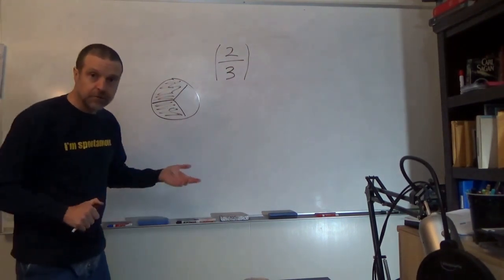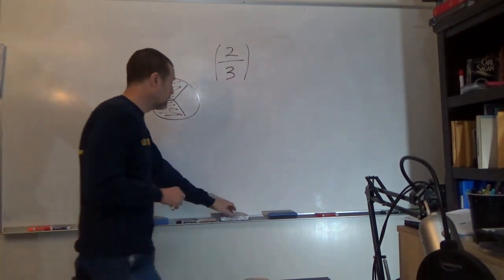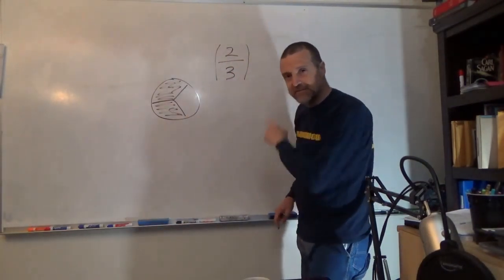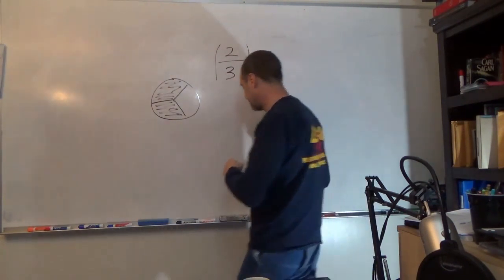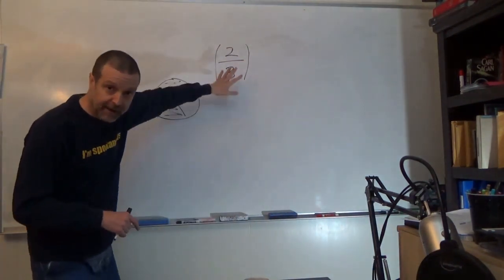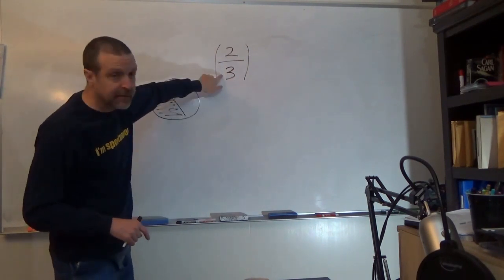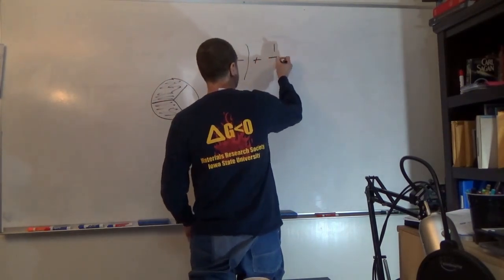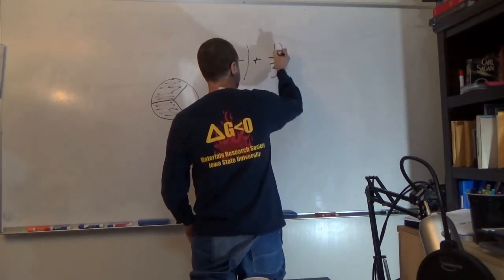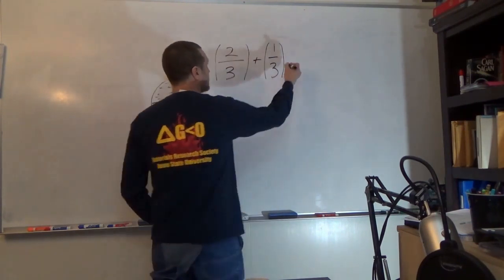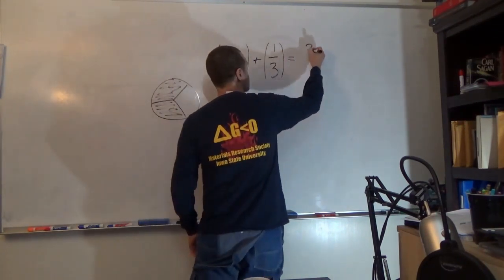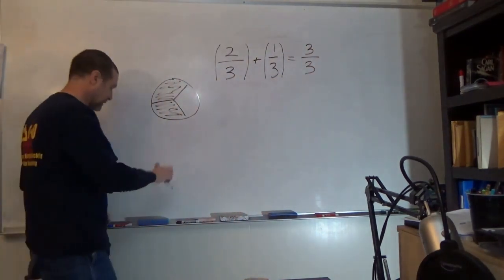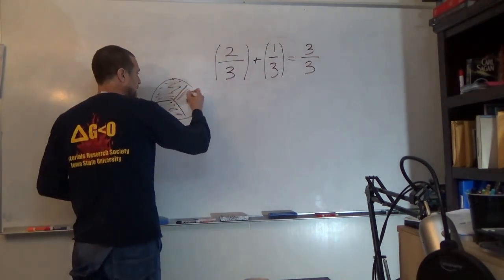There are things about fractions that make them even more powerful. We showed how to add fractions — if the denominator is the same, I can take two-thirds plus one-third. If I add those together, I get two plus one, which is three over three, or three-thirds.